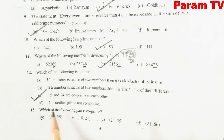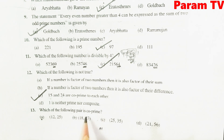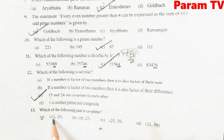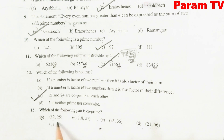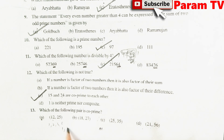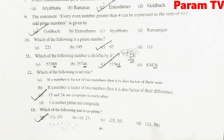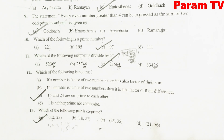Which of the following pair is a co-prime? Co-prime वो होते हैं जिनमें कोई common factor नहीं होता. 12 and 25: 12 के factors 1, 2, 3, 6 होंगे; 25 के factors 1, 5, 25 हैं. कोई common factor नहीं है. A is the right option — they are co-prime.